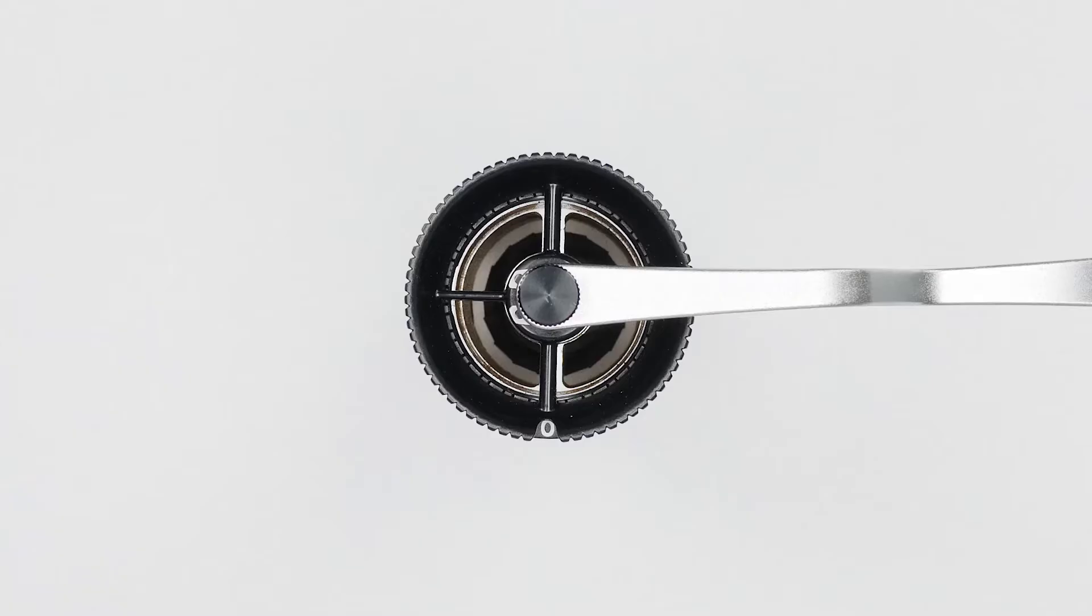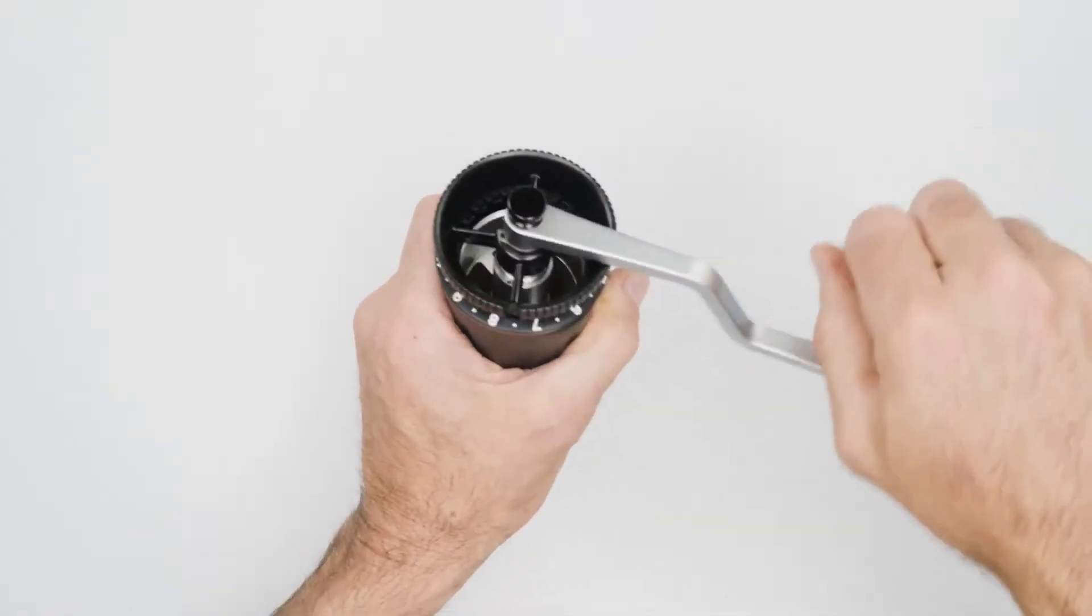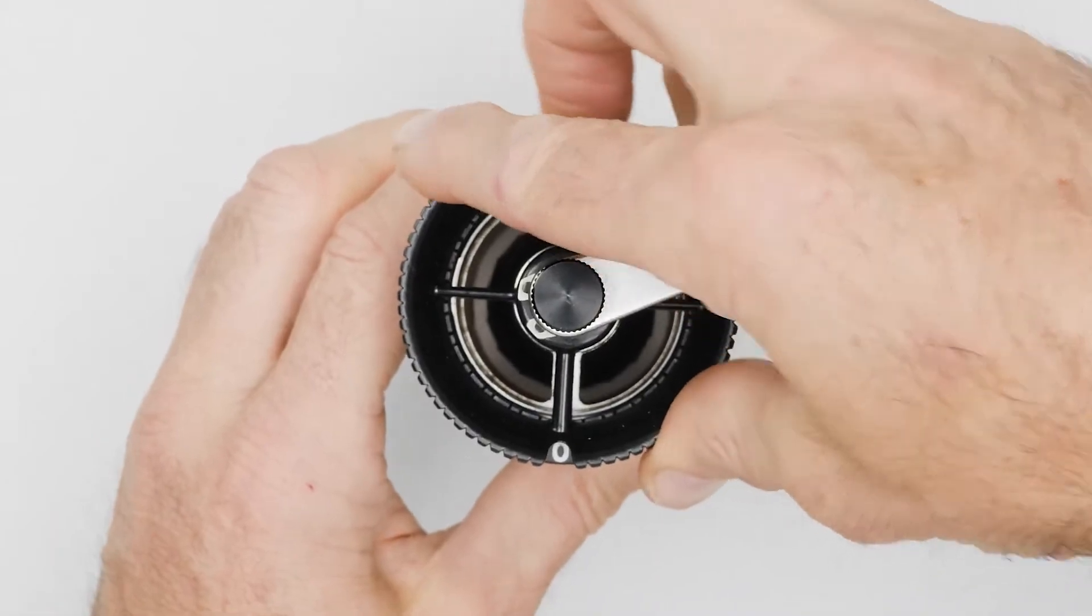The Royal comes set on zero. Whenever you need to find it again, rotate the crown counterclockwise until you feel the burrs locking up. Then rotate the crown clockwise until the notch of the crown lines up with the zero again.